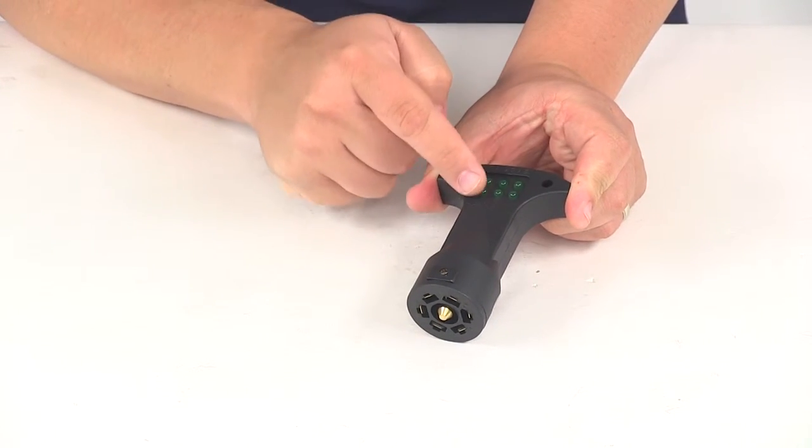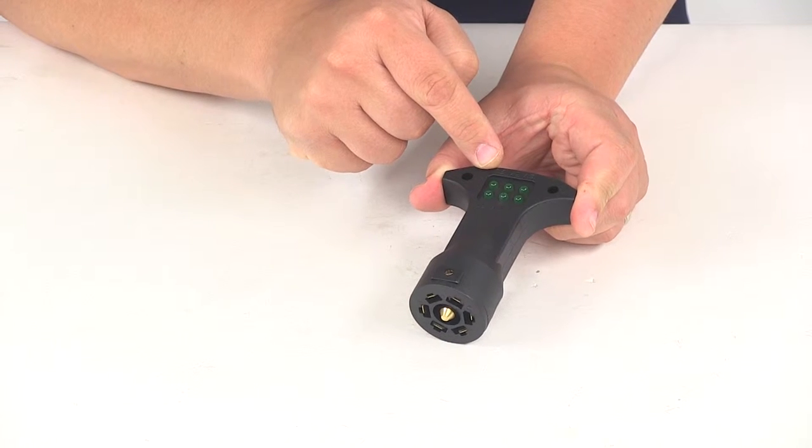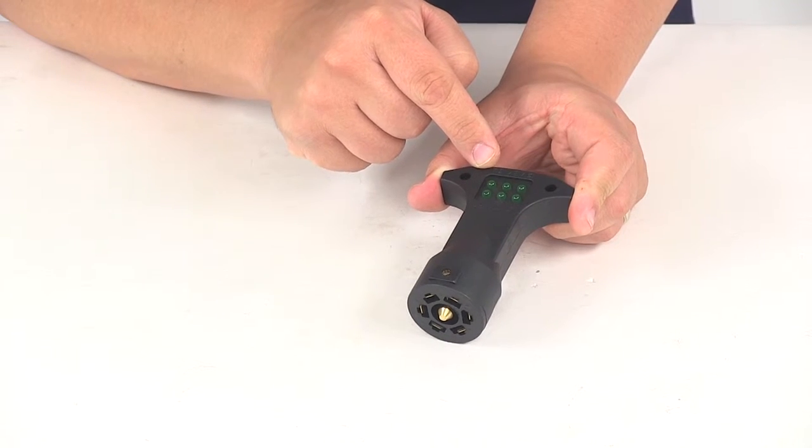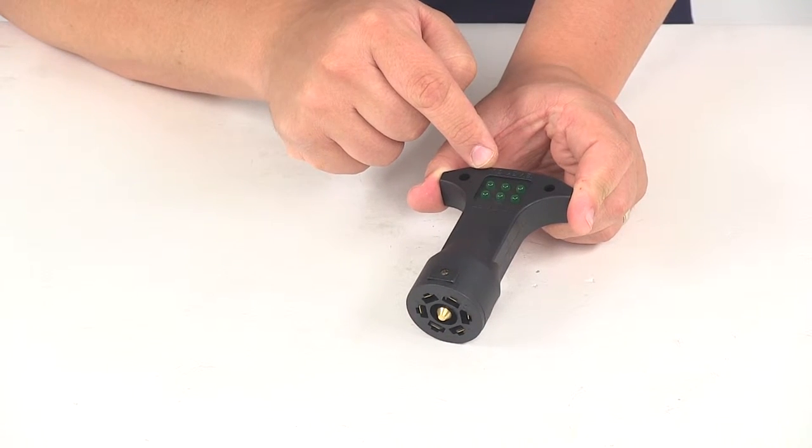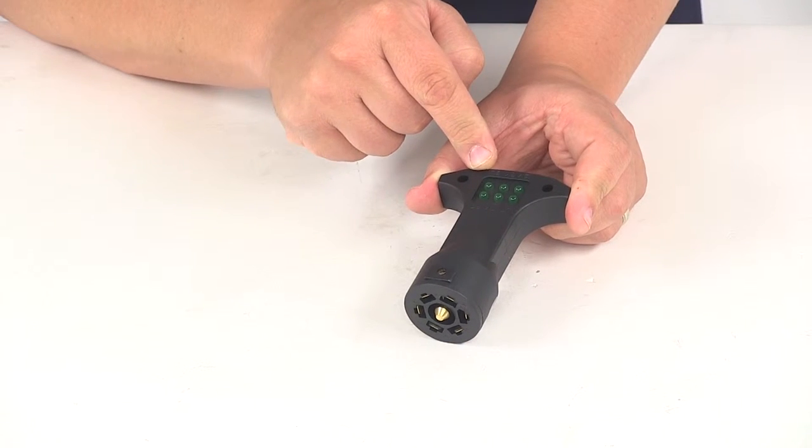Right here are the indicators. BU stands for backup or reverse circuit, which is a center pole connection.